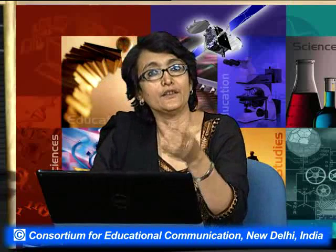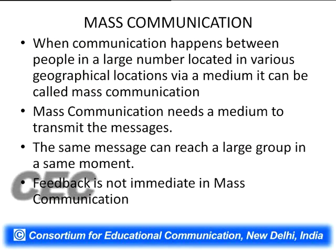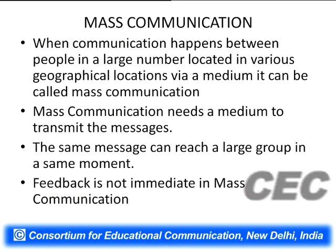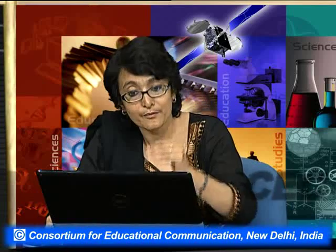Now I will come to mass communication. This form of communication is very technology-centric. Technology helps it to communicate in a wider area. When communication happens between people in a large number located in various geographical locations via a medium, it can be called mass communication. It should be a larger group — a group which never meets, located in various geographical areas. There is a medium which transmits — like right now I am doing a mass communication, and my communication is going to spread out throughout the entire country and is accessible to everyone. This is why this is mass communication.